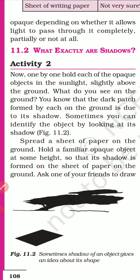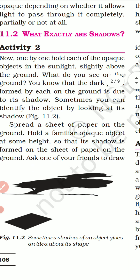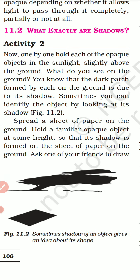Now we'll move to activity number two: what exactly are shadows? Hold each opaque object in the sunlight. An opaque object is one that is solid and light cannot pass through it. Hold that object in front of sunlight slightly above the ground. What do you see on the ground? When you stand in the sun, you see your shadow at the back. Why? Because you are an opaque object and light does not pass through you completely or partially.